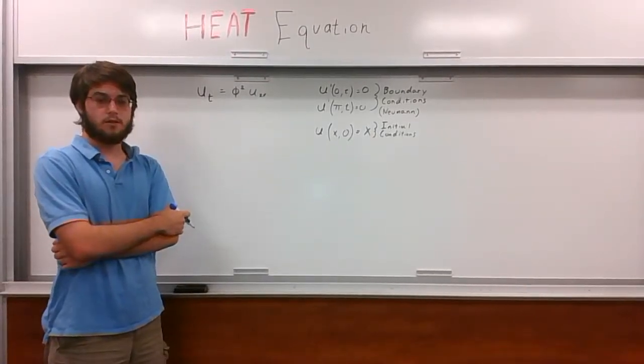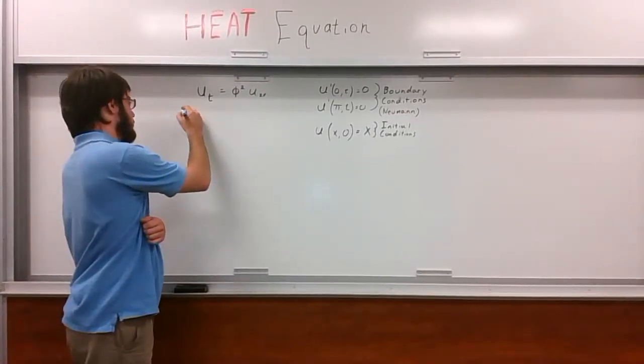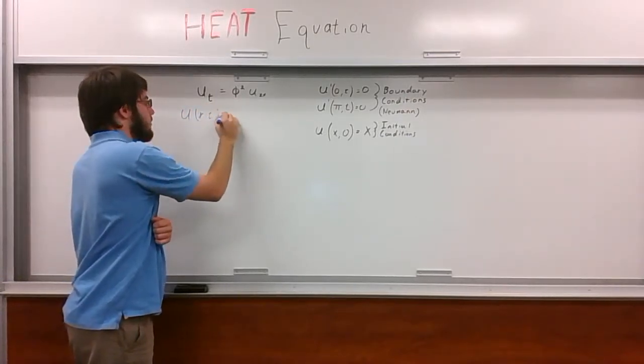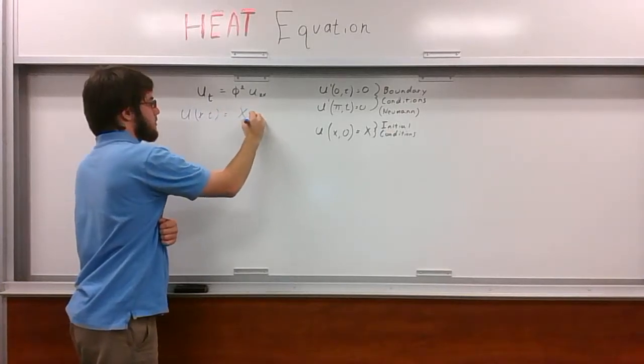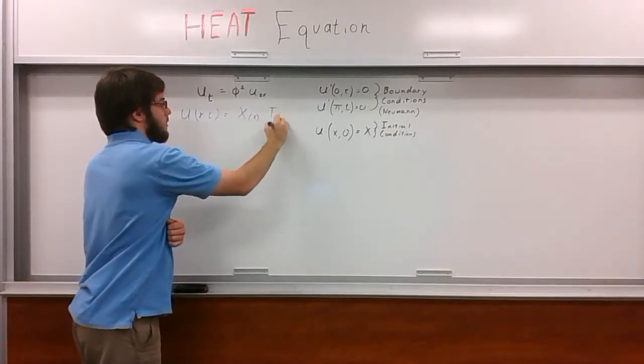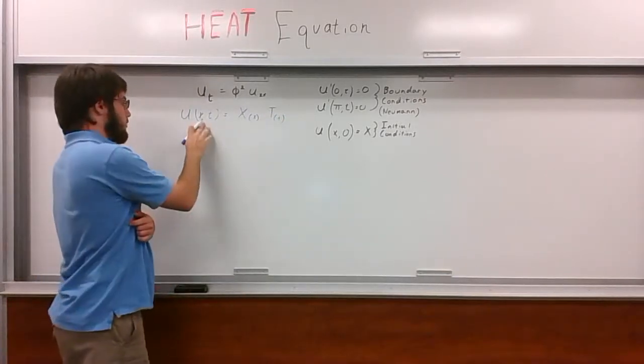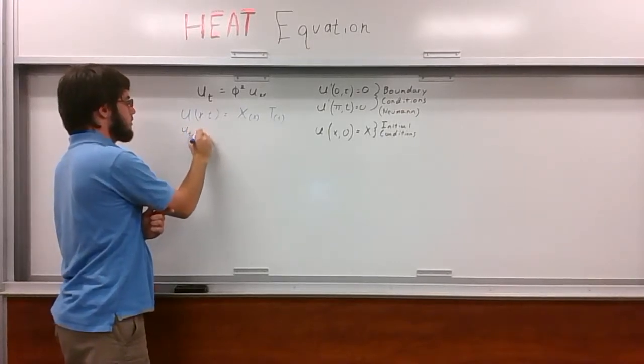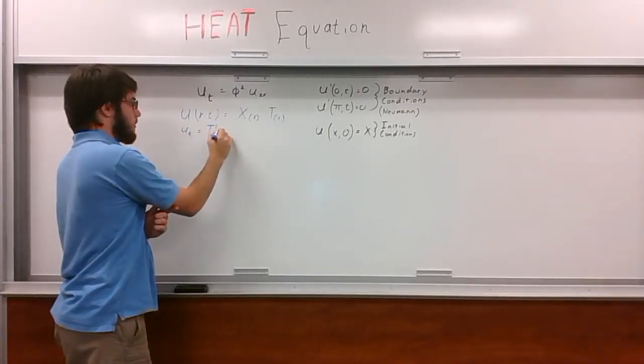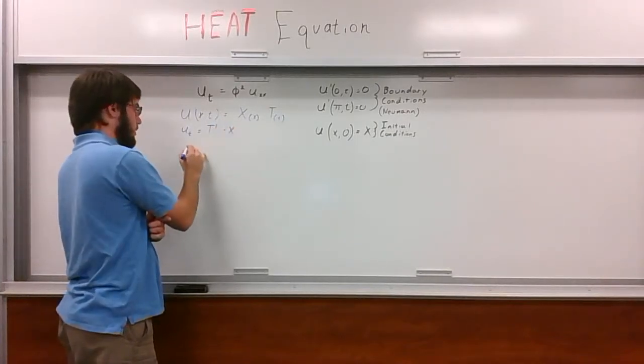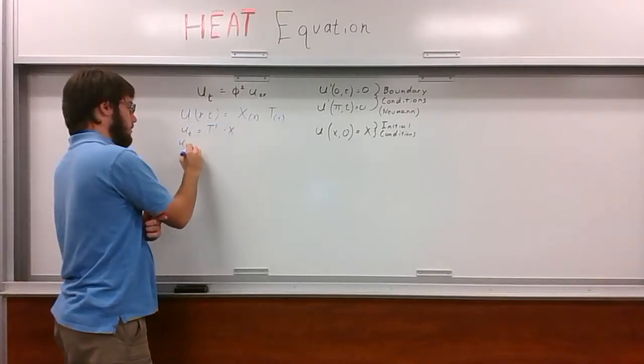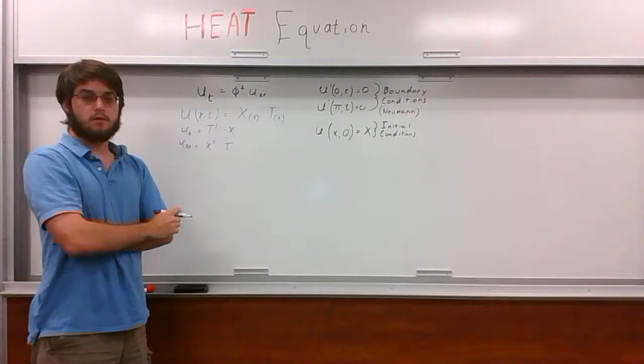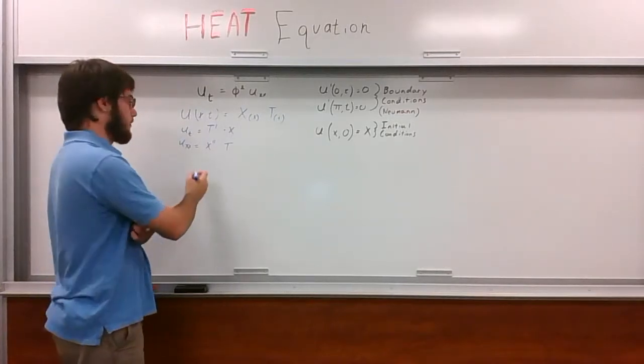To solve the heat equation, we're going to make the assumption that the solution to the partial differential equation takes the form u of x times t equals x of x times t of t. This allows us to represent the individual terms in the PDE as ut equals t prime times x, and uxx equals x double prime times t. We can then substitute these back into the original partial differential equation as follows.